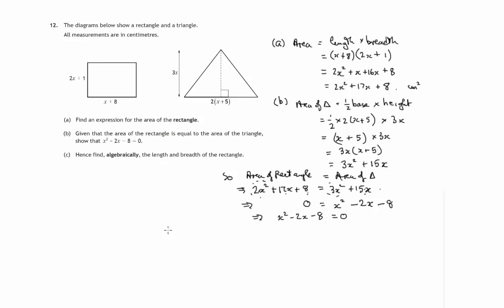So we have to solve. Let's put part C down here. We have to solve this quadratic equation. We have to solve x squared minus 2x minus 8 equals 0. Let's see if it factorizes.